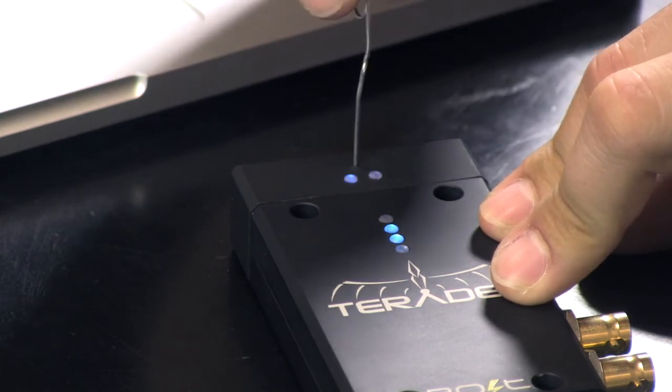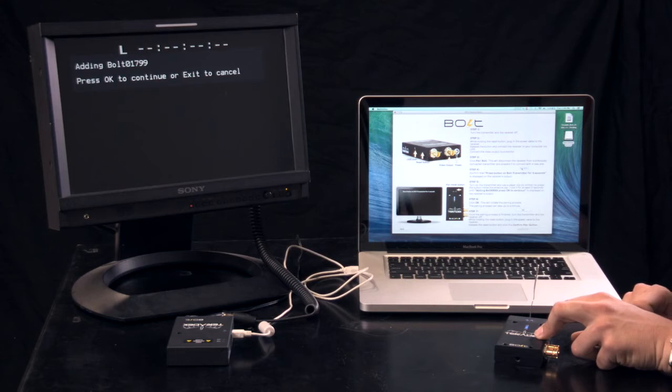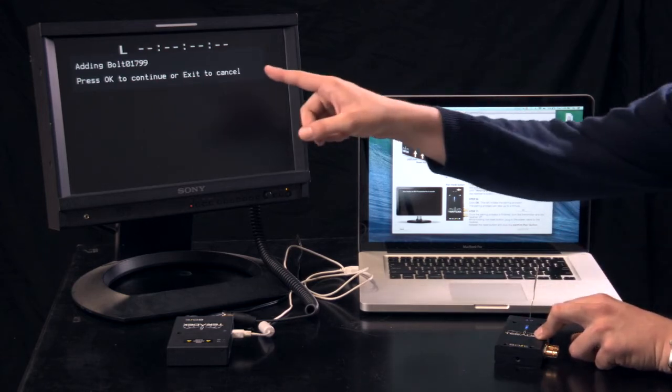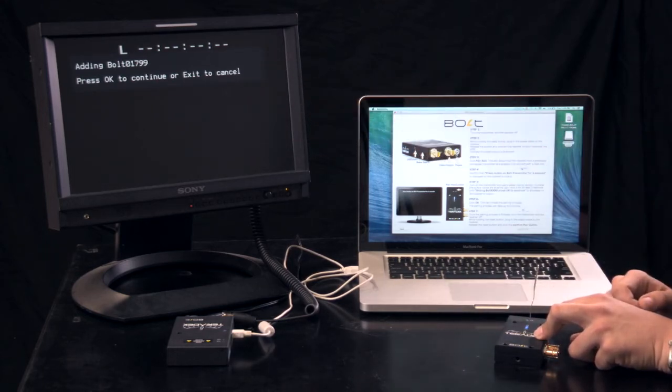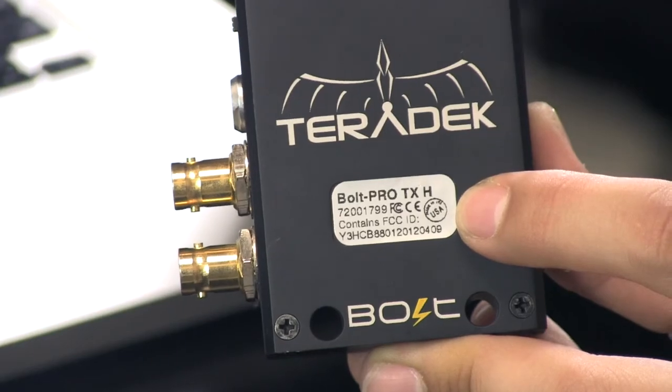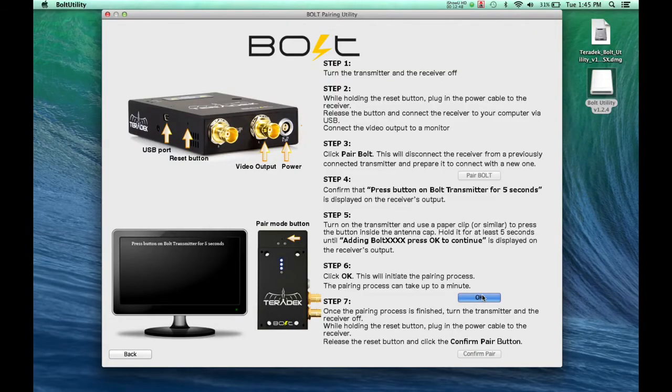Hold it for at least 5 seconds until 'adding Bolt, press OK to continue' appears. Once detected, the receiver will confirm the serial number of your transmitter. Click OK.